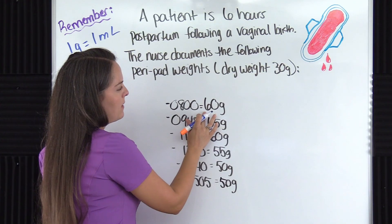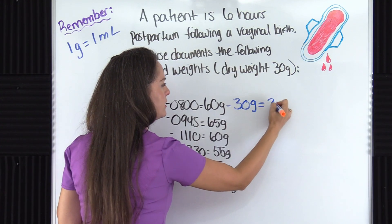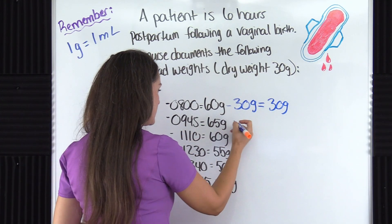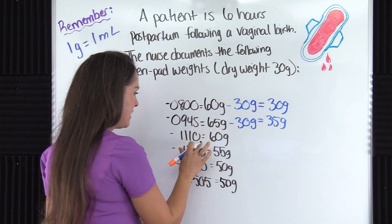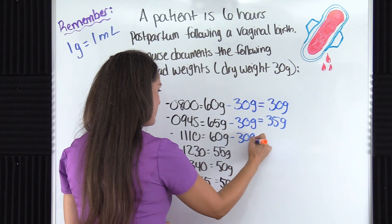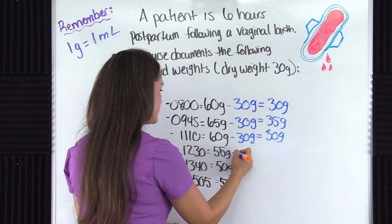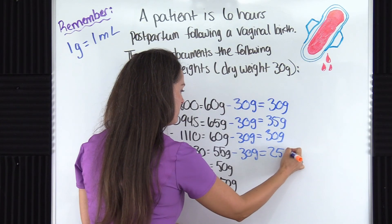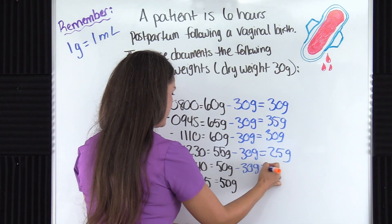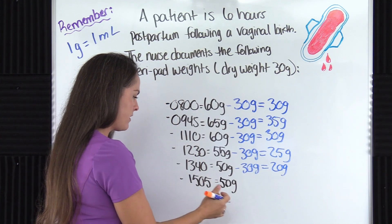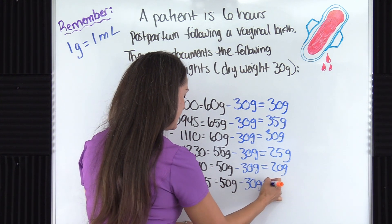At 8:00, the wet weight of that peripad was 60 grams. Subtract 30 grams — we get 30 grams. At 9:45 it was 65 grams; subtract 30 — that gives us 35 grams. At 11:10 it was 60 grams; subtract 30 — that gives us 30 grams. At 12:30 it was 55 grams; subtract 30 — that gives us 25 grams. At 1:40 it was 50 grams; subtract 30 — that gives us 20 grams. And at 3:05 it was 50 grams; subtract 30 — that gives us 20 grams.